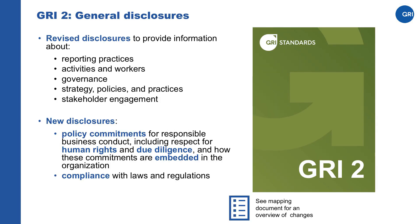GRI 2 General Disclosures contains disclosures about the organization itself: on its reporting practices, its activities, governance, strategy, policies, practices and stakeholder engagement. These disclosures apply to all organizations using the standards. The information requested is important as it gives insight into the organization's profile and the scale of its activities, and it helps provide context to understand the organization's impacts.